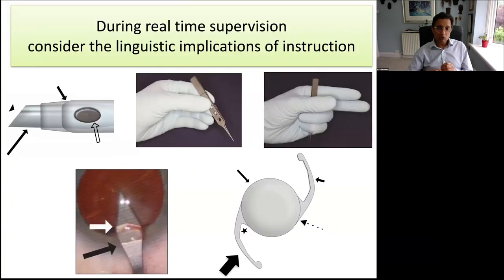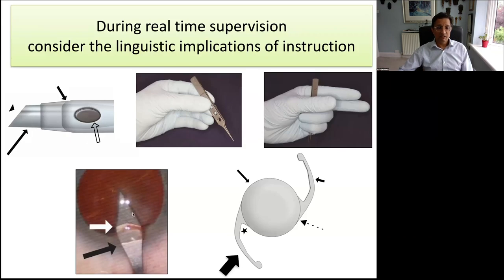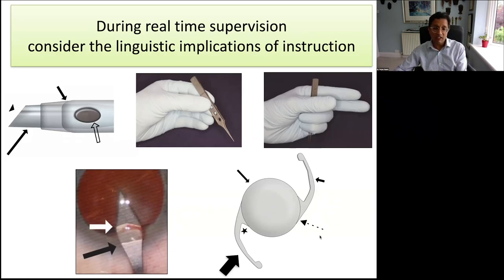It's important to look at real-time supervision and the linguistic implications of whatever language you speak. Work out your instruction — what do you call the phaco tip, the long edge, the aperture, the sleeve? What do you call the keratome — the cutting edge, the shoulder, external ostium, internal ostium? The lens — leading haptic, trailing haptic, optic-haptic junction, the shoulder, the optic. Everything has a term so that you and the trainee can understand each other.